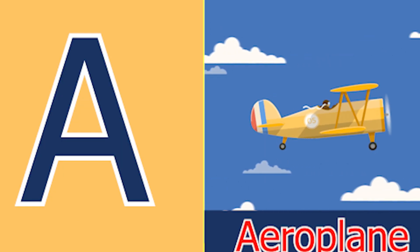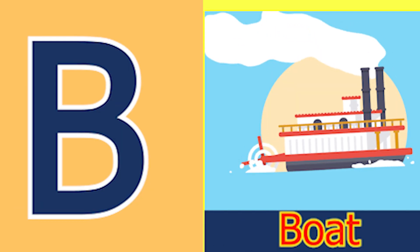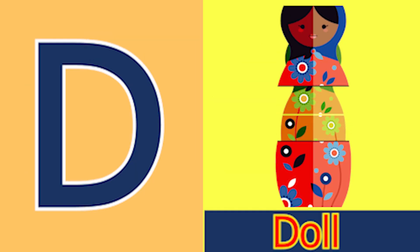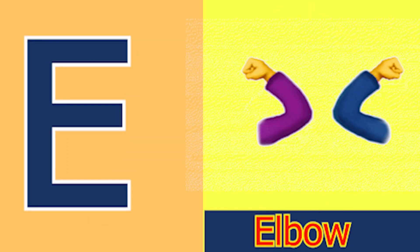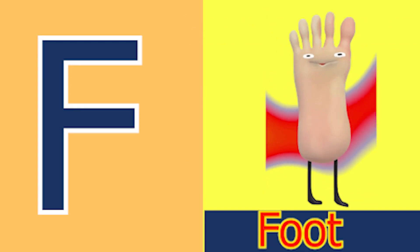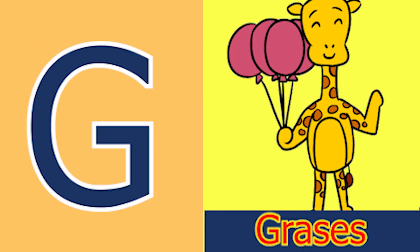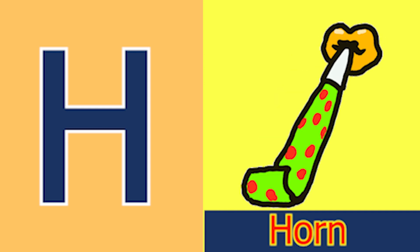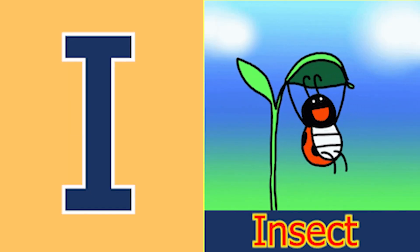A for aeroplane, B for boat, C for candy, D for doll, E for elbow, F for foot, G for glass and H for horn, I for insect.